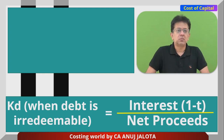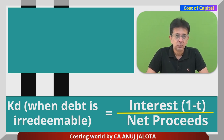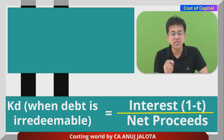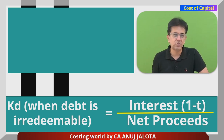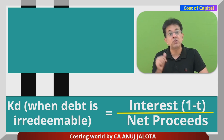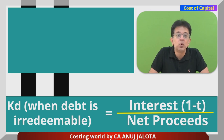In the question, Ke is directly given as 10%, but Kd you will have to compute. The interest rate was 5%, but that is before tax. All your costs are always calculated after tax. Your tax rate was 30%, so Kd = interest rate × (1 − tax) = 5% × (1 − 0.30) = 5% × 70% = 3.5%.